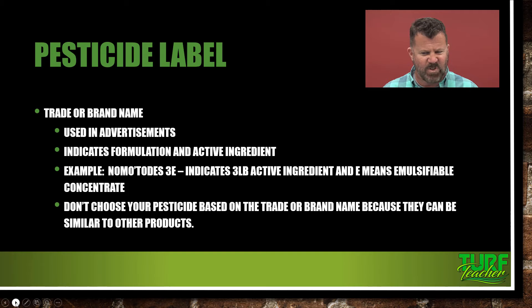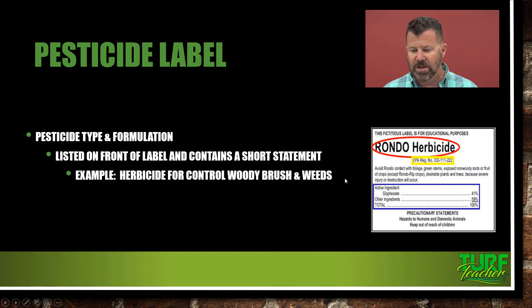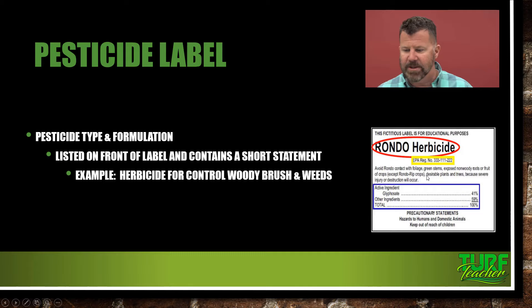Looking at the Rondo herbicide again — pesticide type and formulation. The pesticide type is a herbicide. The formulation — whether it's emulsifiable concentrate, liquid, granular, or any other type — is listed on the front of the label and contains a short statement. For example: 'Herbicide for the control of woody brush and weeds.' Avoid Rondo contact with foliage, green stems, exposed roots or fruit of crops except Roundup Ready crops, or desirable plants and trees, because severe injury will occur.